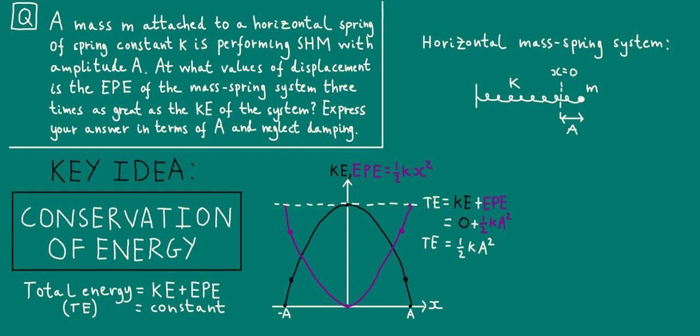We could now get an expression for the kinetic energy and work with that. However, it's simpler to realize that the elastic potential energy and kinetic energy receive or get a share of the total energy in a three to one ratio. This means that the elastic potential energy will be three quarters of the total energy. So, here we've just replaced EPE by half k x squared and TE, the total energy, by half k a squared.